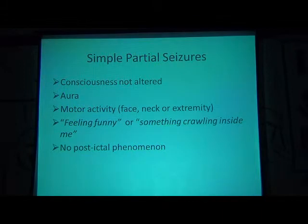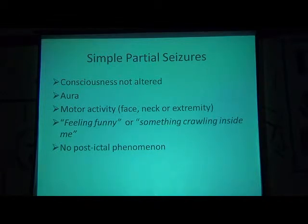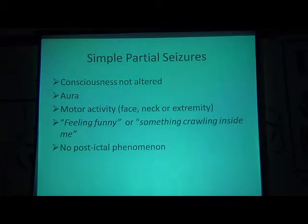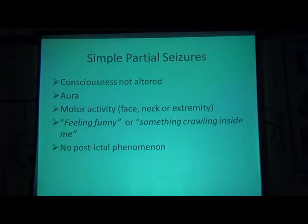The next type of seizure is the simple partial seizure. The main difference between simple partial seizure and generalized tonic-clonic seizure is that consciousness is not altered in simple partial seizures. The patient may have an aura, and the seizure may be motor or sensory. If it is a motor seizure, depending upon the lobe involved, the manifestation is in the face, neck, or extremity. The patient may feel something funny or a crawling sensation, and there is no post-ictal phenomenon.